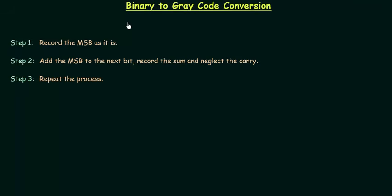In the last lecture we completed the introduction of grey code. In this lecture we are going to learn binary to grey code conversion — a very important topic, and there must be one problem in your exam from this topic. There are three steps involved in the conversion, and I will explain all three steps one by one.